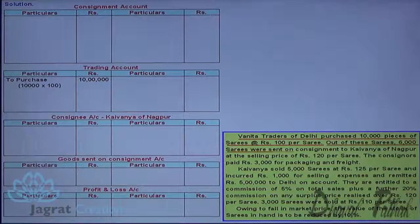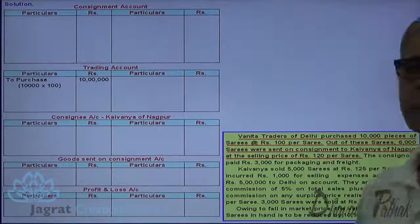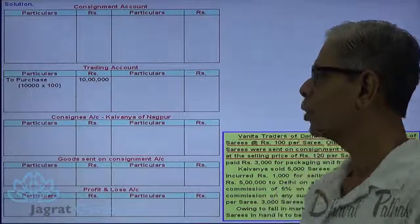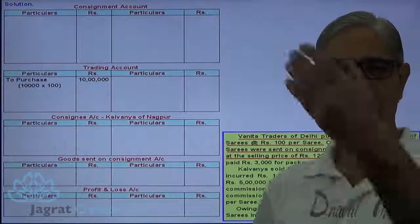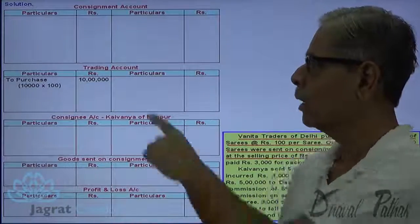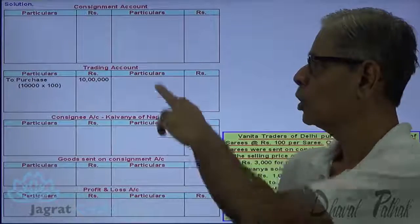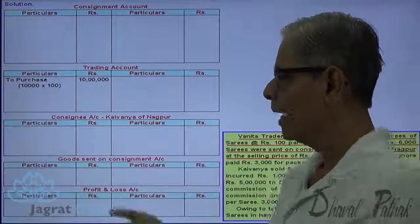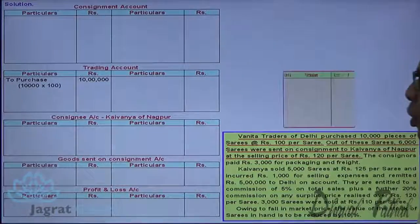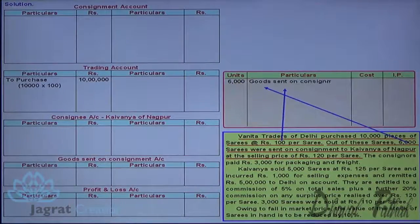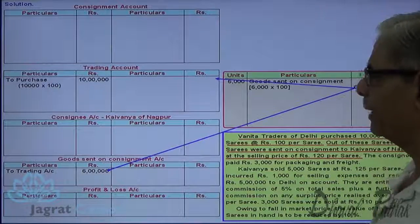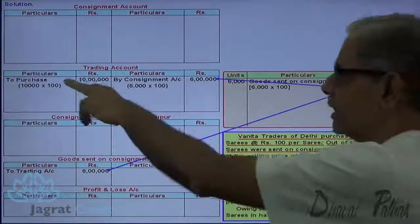Out of 10,000 units, 6,000 sarees were sent on consignment for sale. When goods are sent on consignment, the trading account is to be credited. So 6,000 sarees — their cost is 6,000 into ₹100, so the cost of goods sent is ₹6 lakhs. The entry is: goods sent on consignment account debit to trading account credit — ₹6 lakhs.